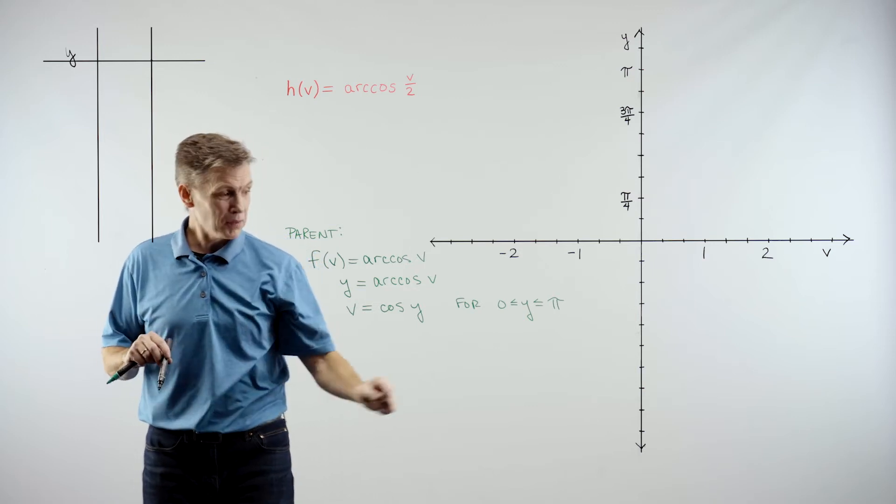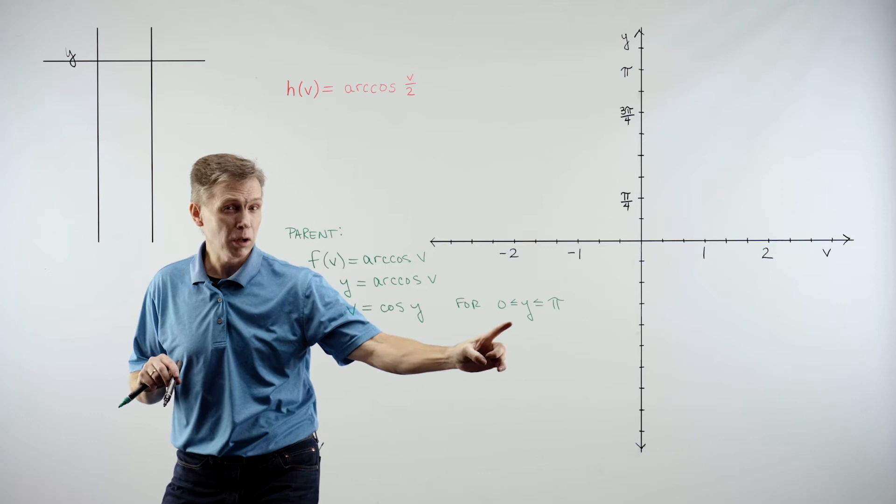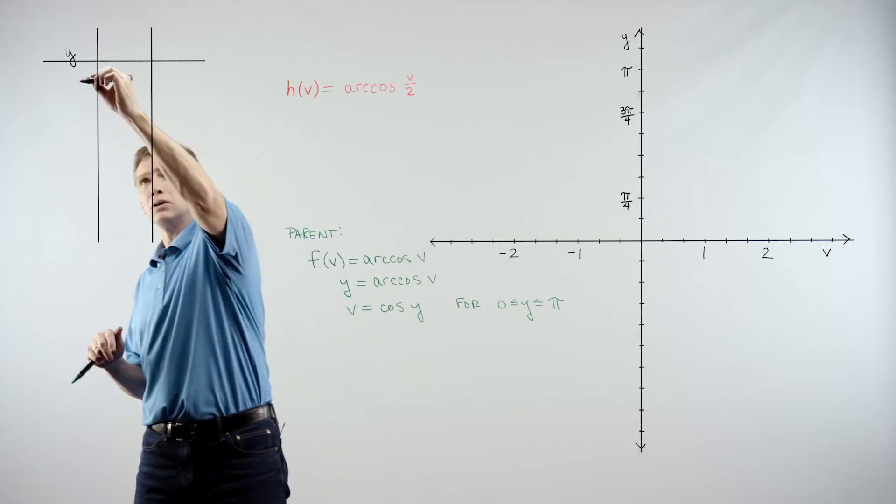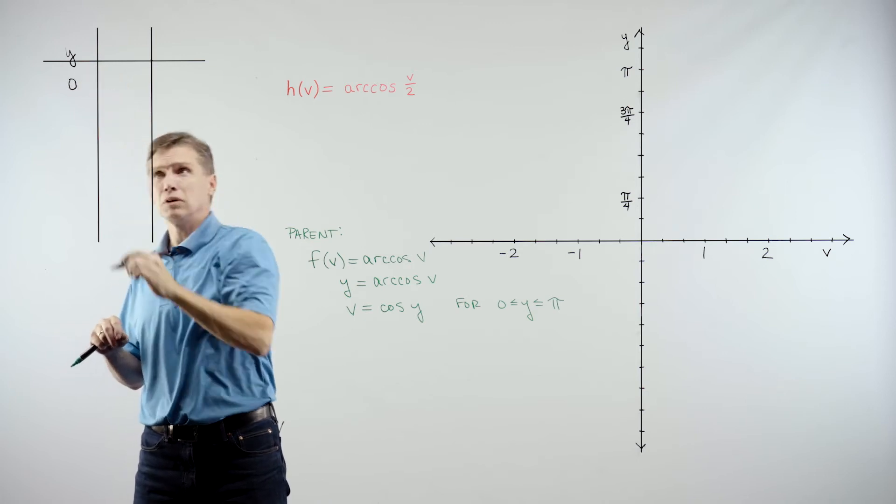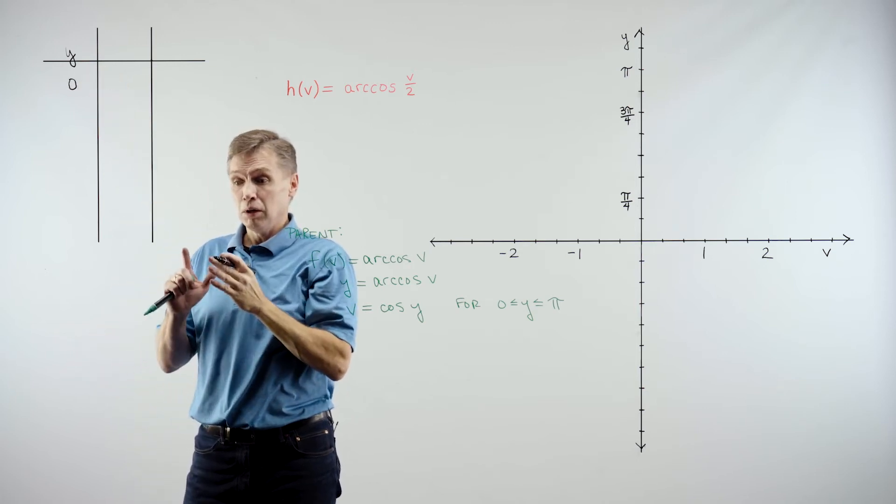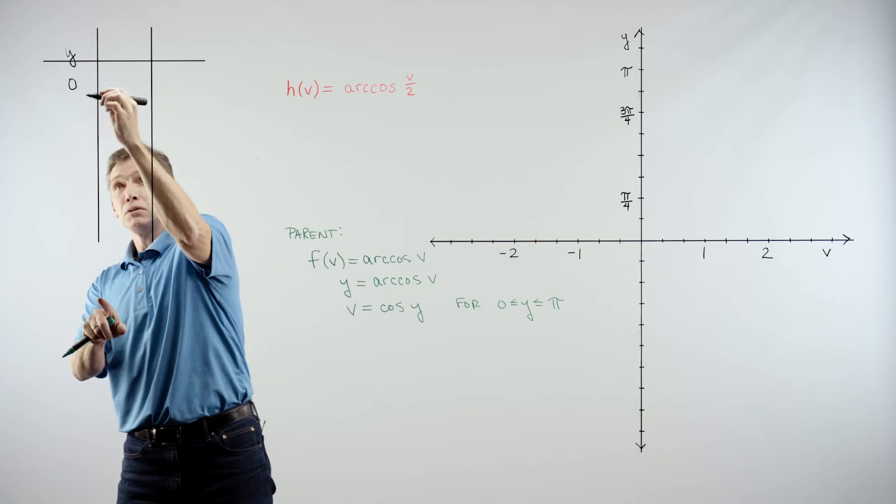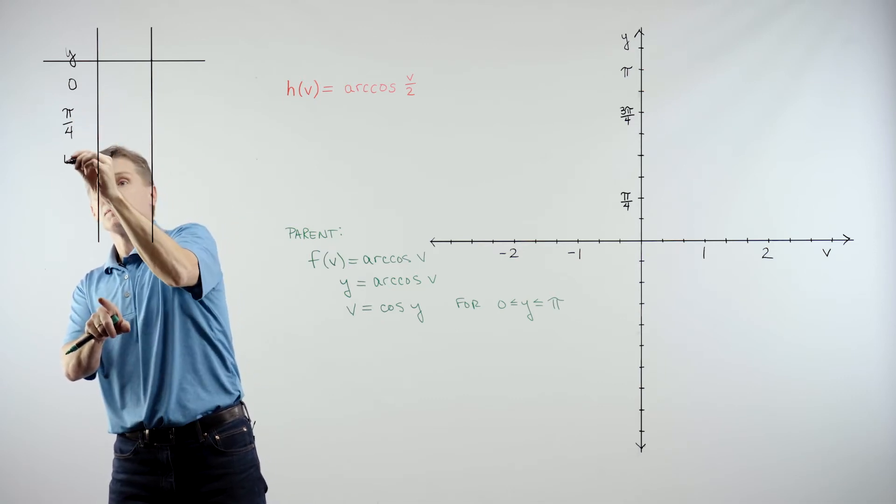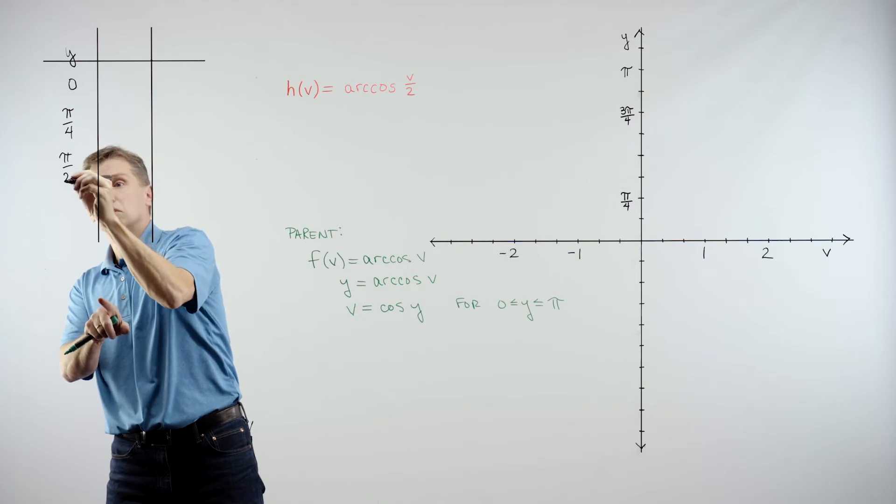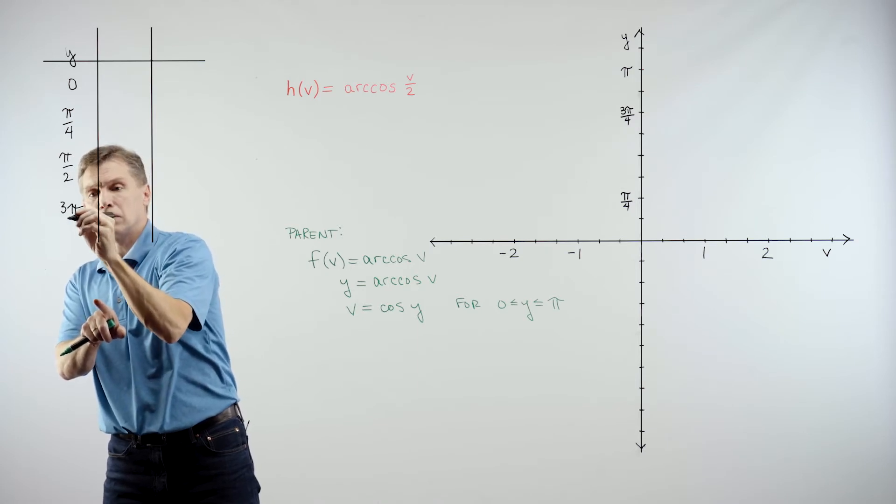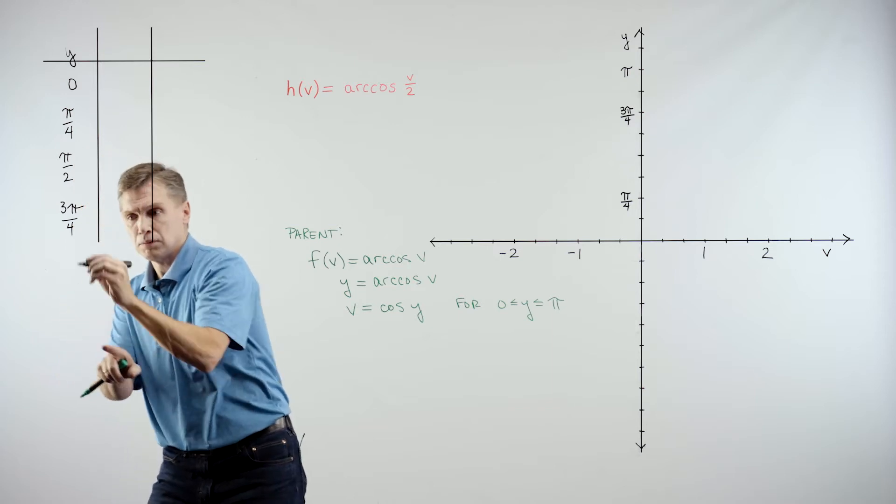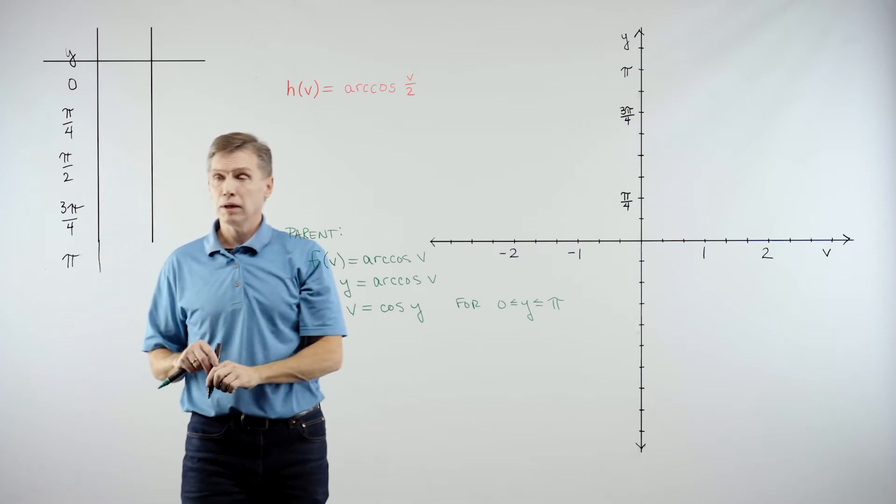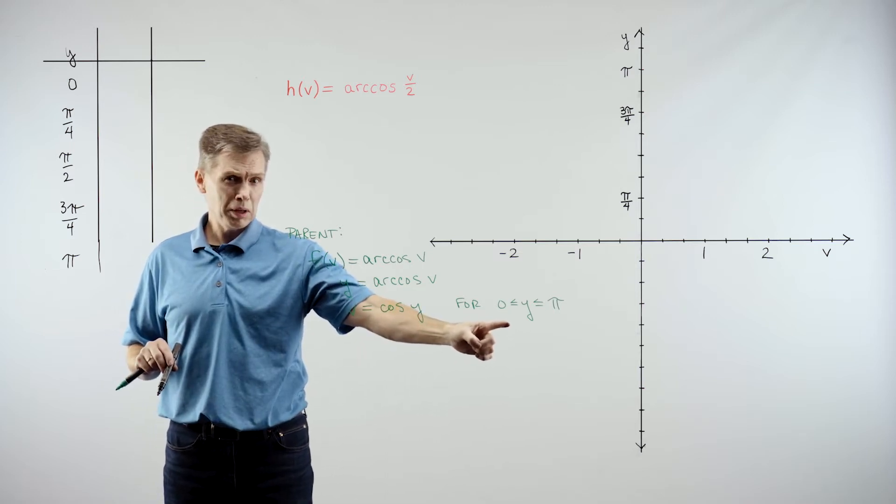So when I get to my table here, I'm going to make my first column y and start picking values of y that I know in terms of my trig functions. And I'm using this compound inequality to guide me as well. So y is going to be between 0 and pi, so let's pick some values here in this first column for y. And I'm going to pick 0 and pi over 4 and pi over 2, 3 pi over 4, and we'll end at pi. Okay, following that compound inequality.